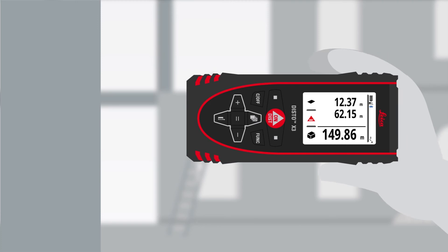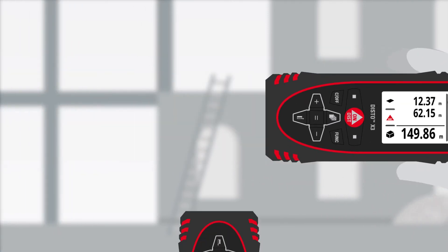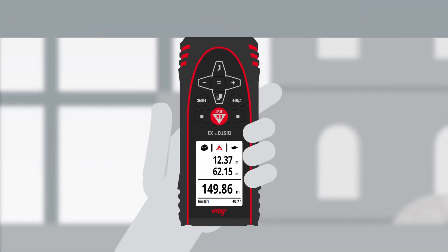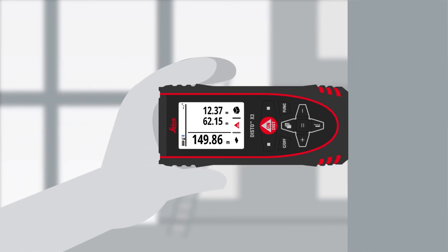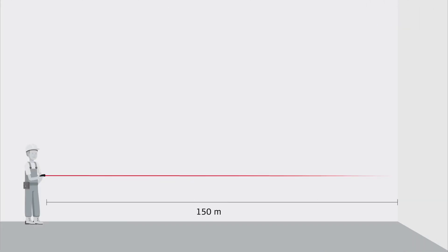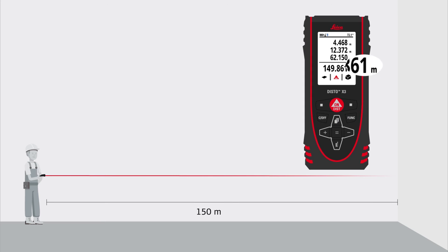All measurement results are easily read on screen. The display rotates according to the measurement direction. It measures distances of up to 150 meters with millimeter precision.